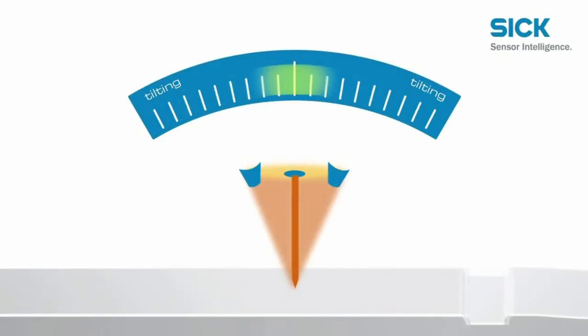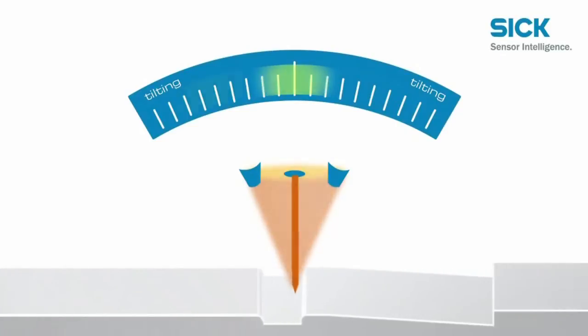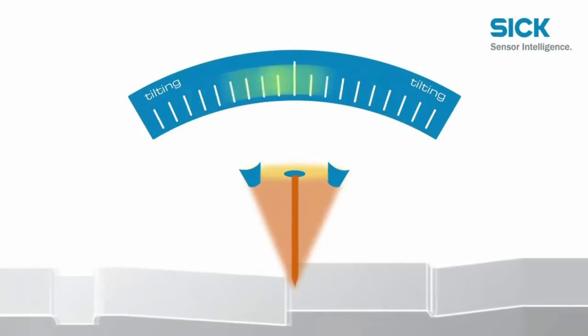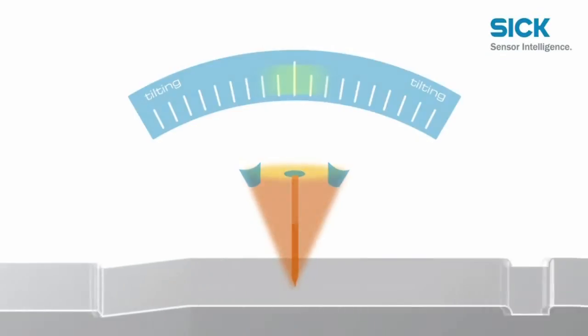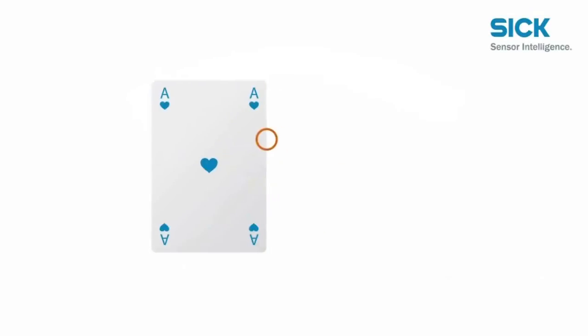Not only are tilted surfaces reliably detected, but also small edges and corners, very small angles, or transitions with small bending radii. Delta-S technology can even detect the edges of playing cards.